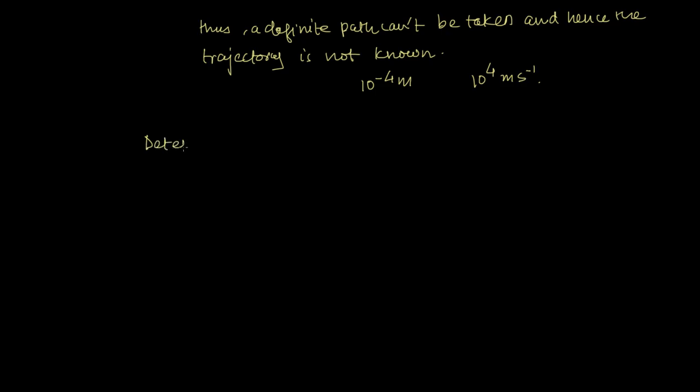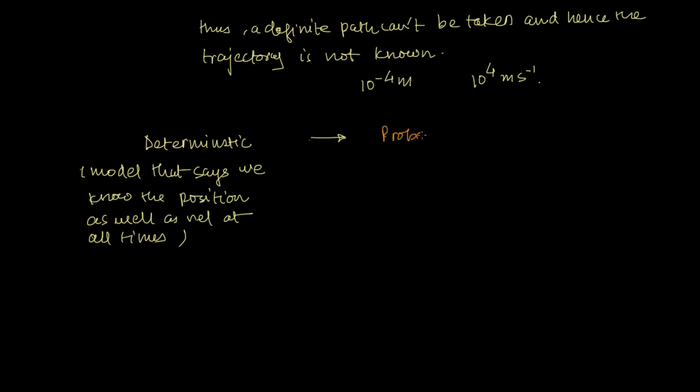From a deterministic model, deterministic means the model that says we know the position as well as velocity at all times - and by position you mean that you know the trajectory - from here, we moved on to the probabilistic approach.